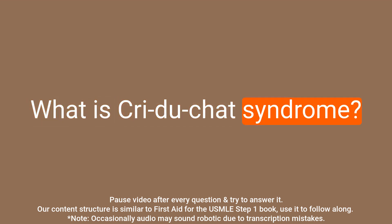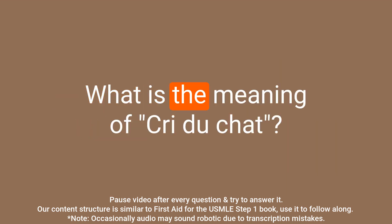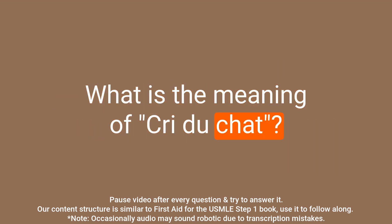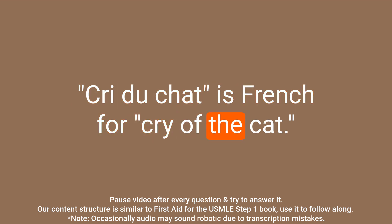Question: What is Cri-du-chat syndrome? Answer: Cri-du-chat syndrome is a congenital deletion on the short arm of chromosome 5. Question: What is the meaning of Cri-du-chat? Answer: Cri-du-chat is French for 'cry of the cat.'